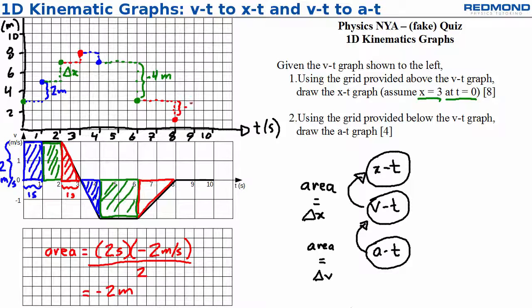From 8 to 10 seconds, the area of the VT graph is 0 because the height is 0, so the position at 10 seconds is the same as at 8 seconds, 1 meter. This makes sense. When the velocity is 0, there's no change in position.